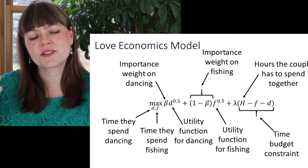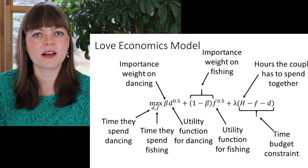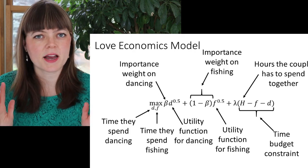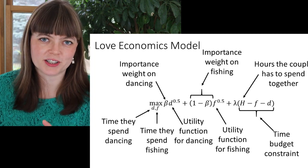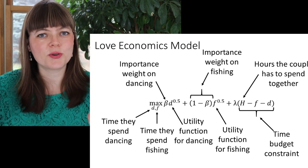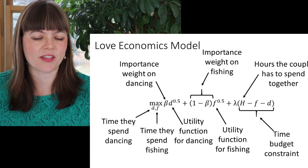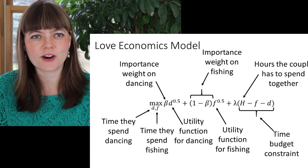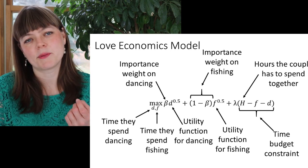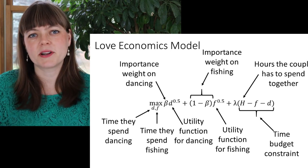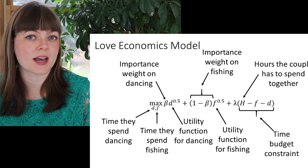Here is the model. We're going to imagine a husband and a wife. The husband and wife have a fixed amount of time to spend together, so there's going to be a time budget constraint. There are only two things they can do: either they can go fishing or they can go dancing together. The choice variables are how much time you spend fishing and how much time you spend dancing. The budget constraint is just that those two times have to add up to their total time together, and there's diminishing marginal utility over the time spent doing both.